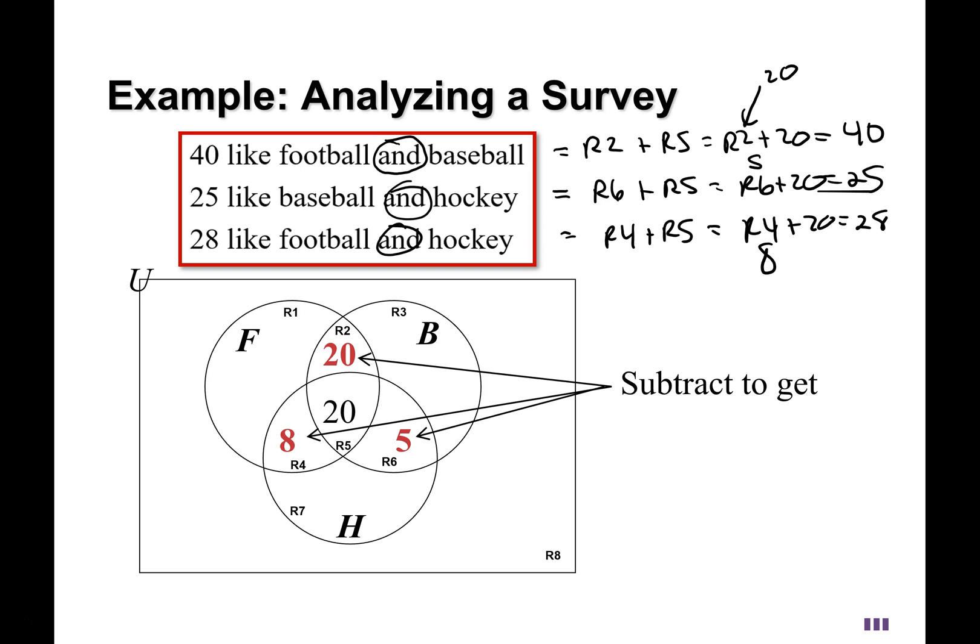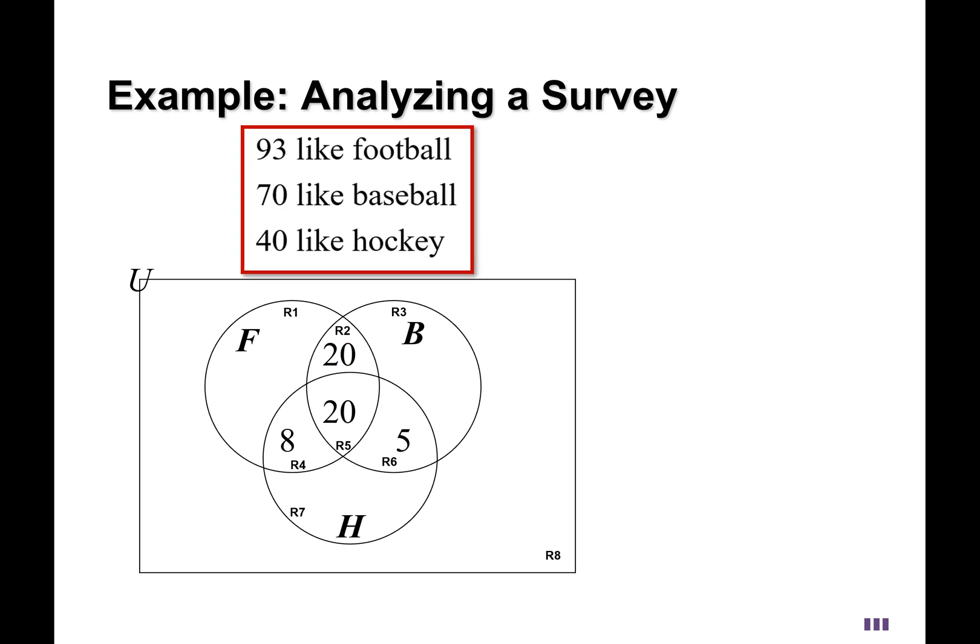Then we move to the first piece of information where we knew the totals for each circle. 93 is the total for the football circle. 70 is the total for the baseball circle. 40 is the total for the hockey circle. But these circles are made up of four different regions. The football circle is made up of region 1, and region 2, and region 4, and region 5. But we know region 2, 4, 5 already. We know those numbers: 20, 8, and 20. So we add those up and we get 48. So region 1 plus 48 should be that 93.